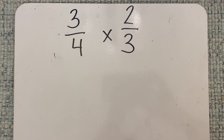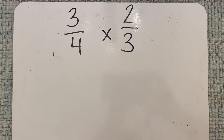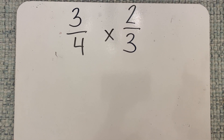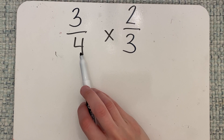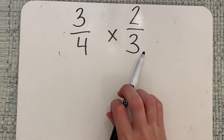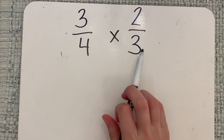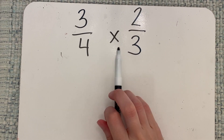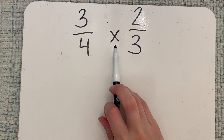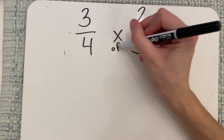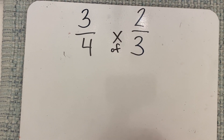When we multiply two fractions by each other, what we're really doing is finding a part of a part. We're finding three-fourths of two-thirds. And I always emphasize that this multiplication sign says "of."